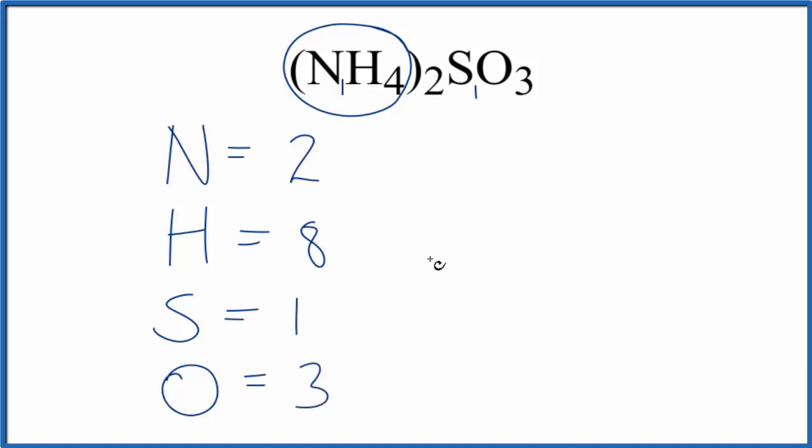If you add these all up, you have a total of 14 atoms for this NH42SO3, ammonium sulfite.